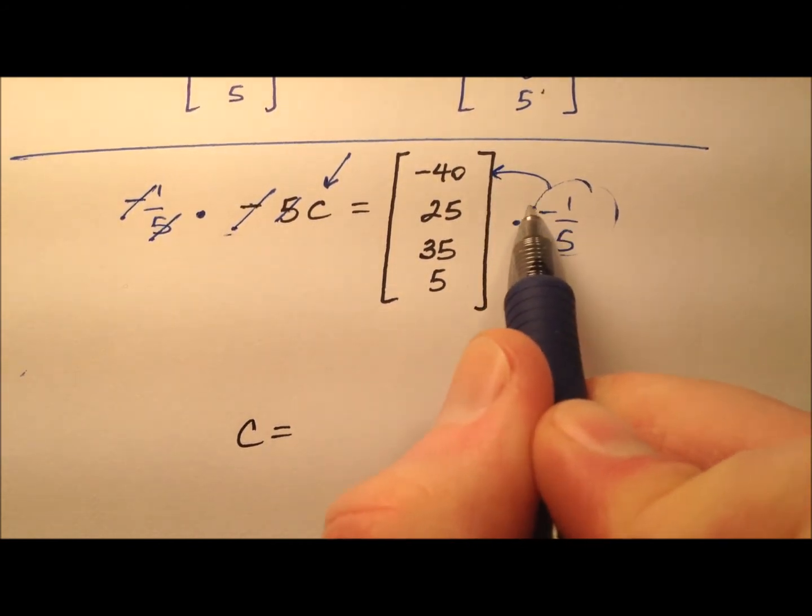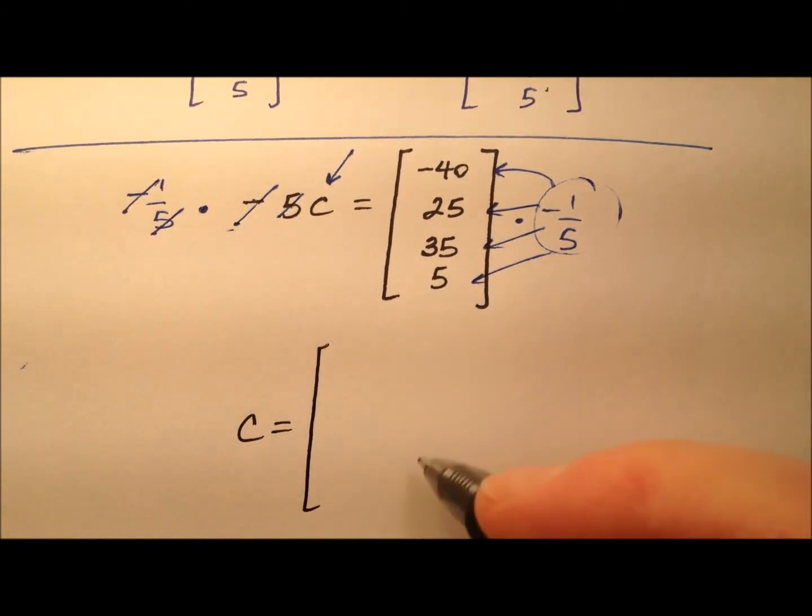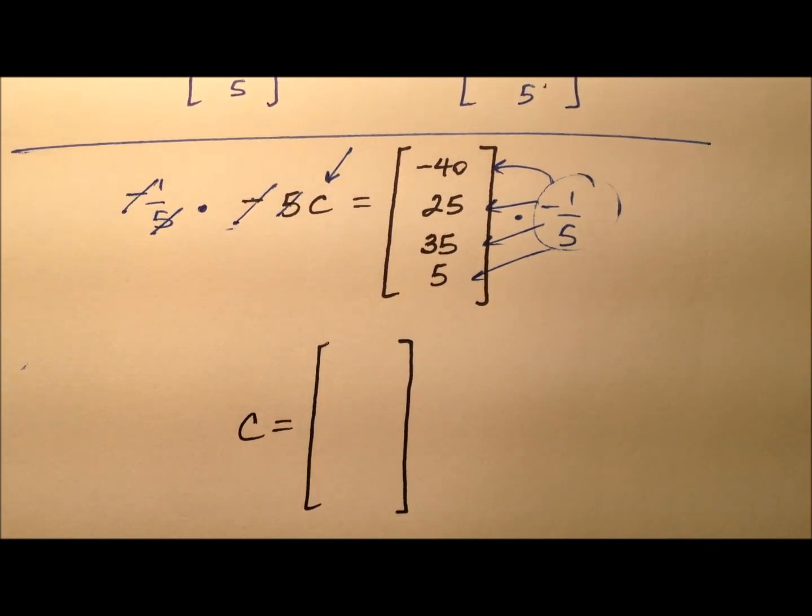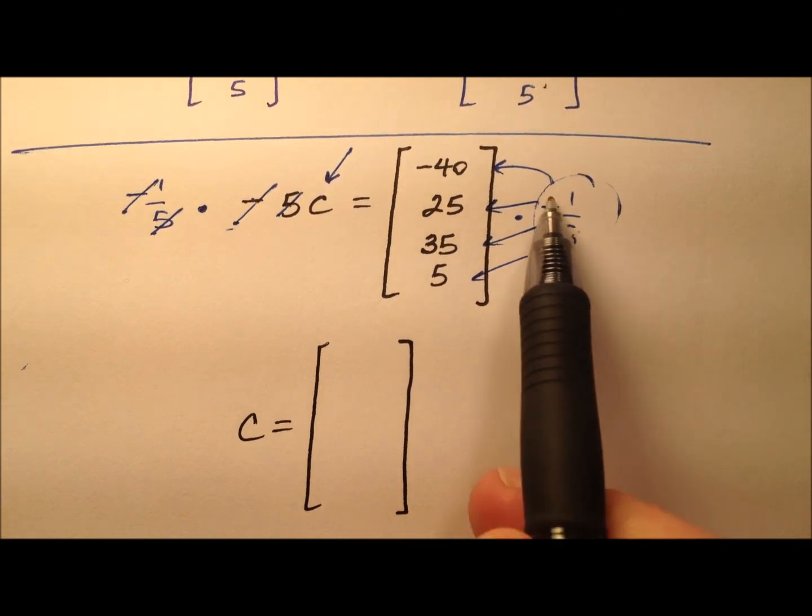I'm going to distribute that through and multiply that negative 1 fifth by every single entry in that column matrix. I'll end up here with C, this column matrix. Multiplication by negative 1 fifth, you could think of it as division by negative 5.